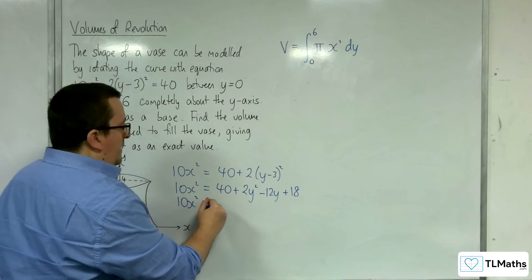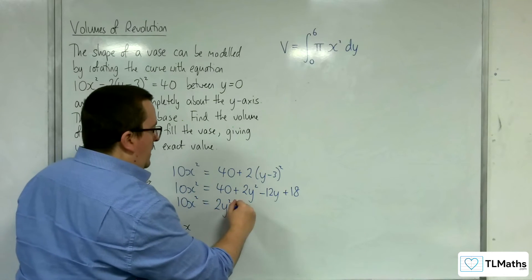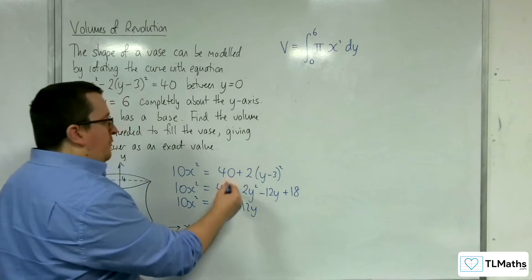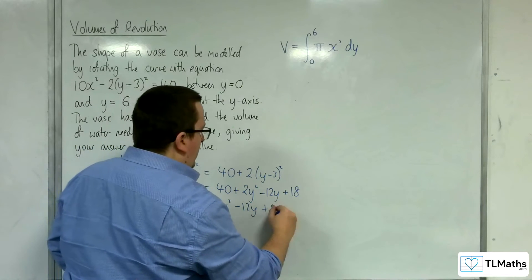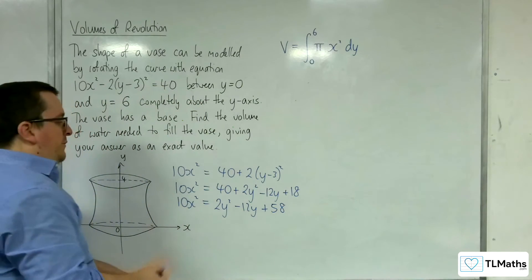So 10x² is equal to 2y² - 12y, 40 plus 18 is 58. And now I'm going to divide through by 10.